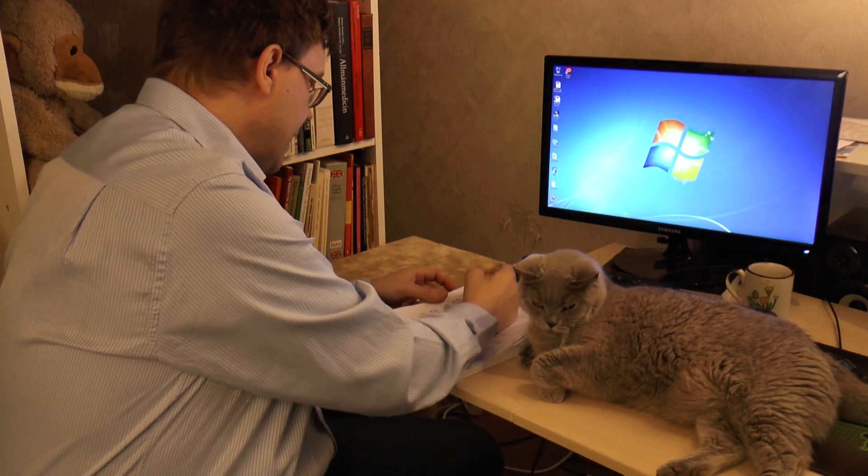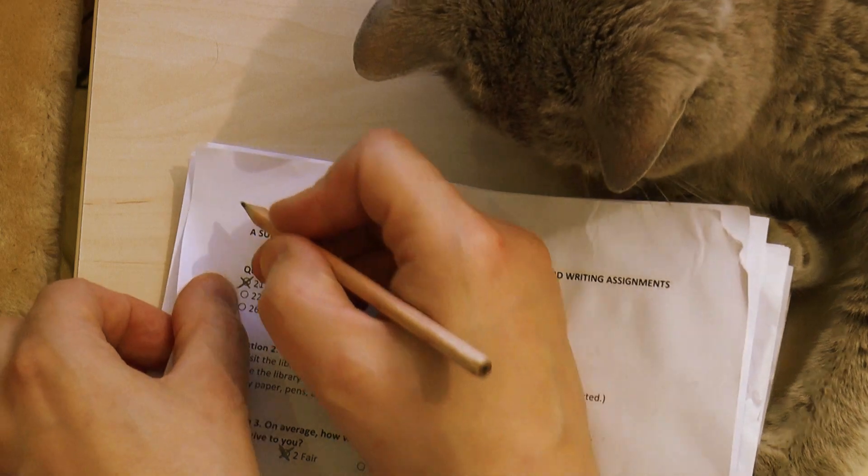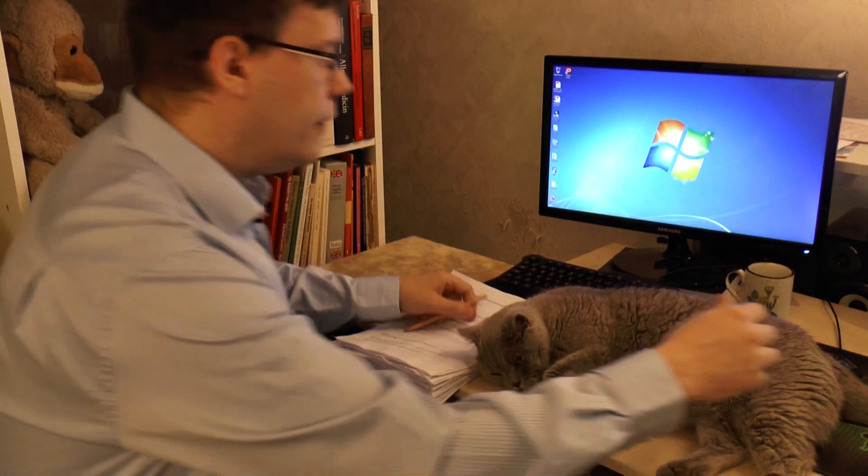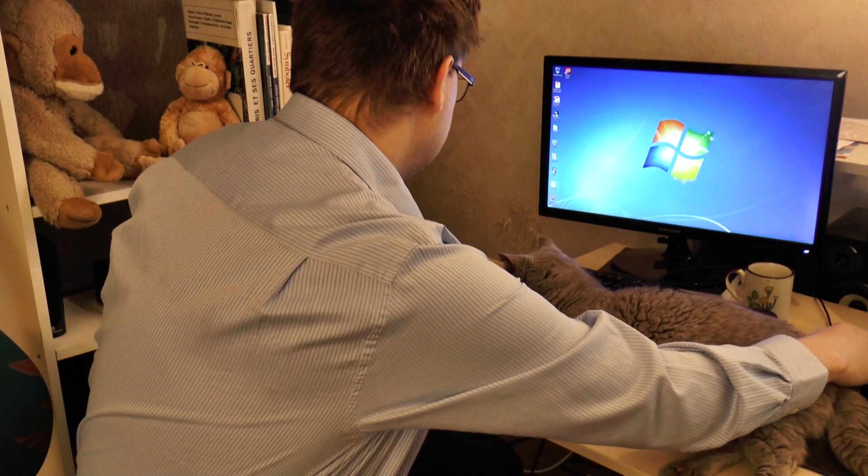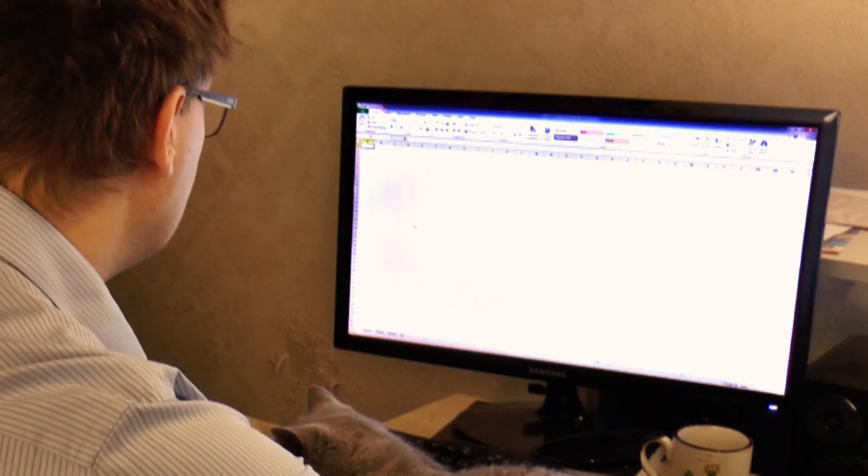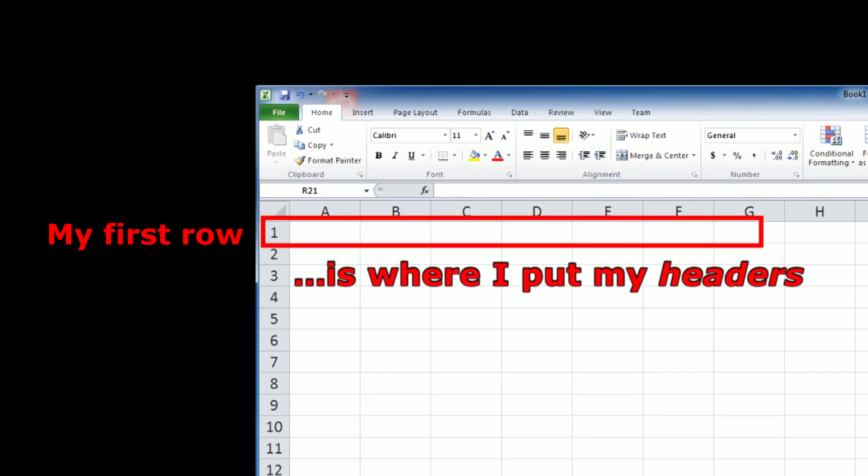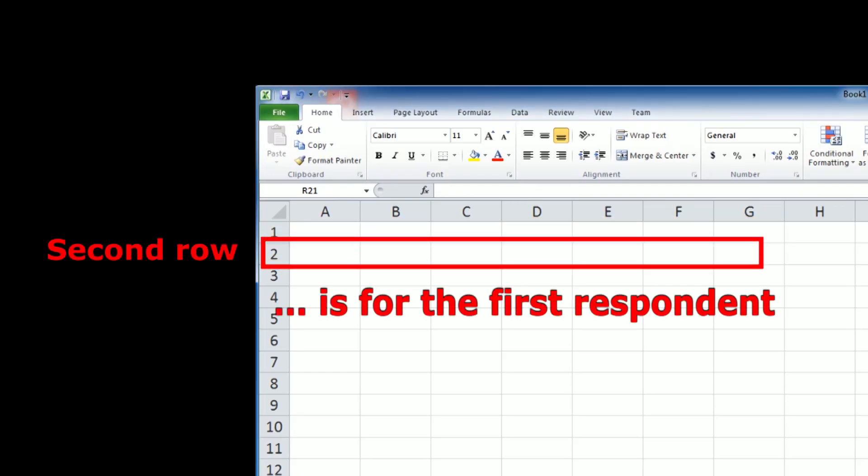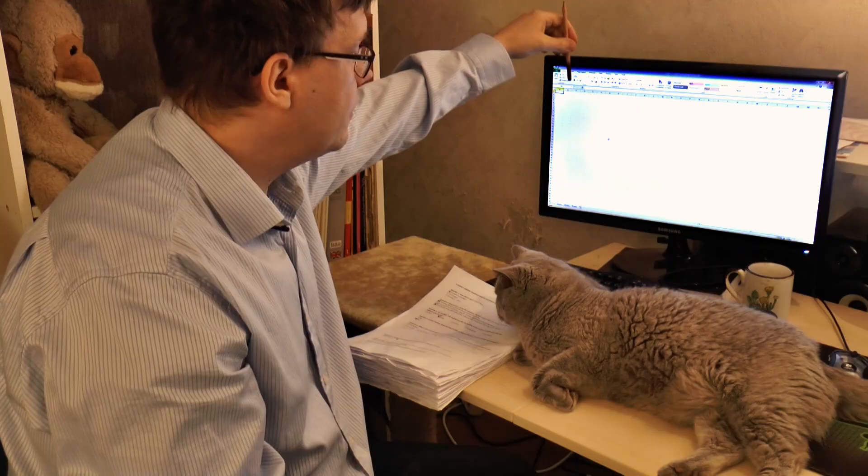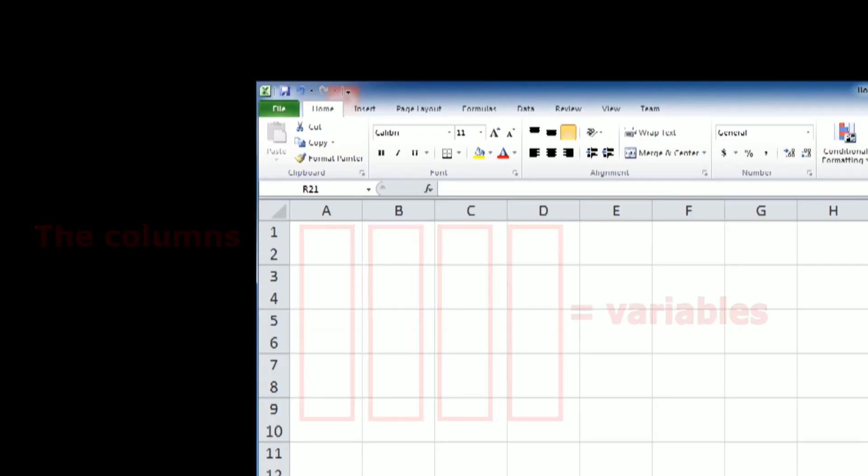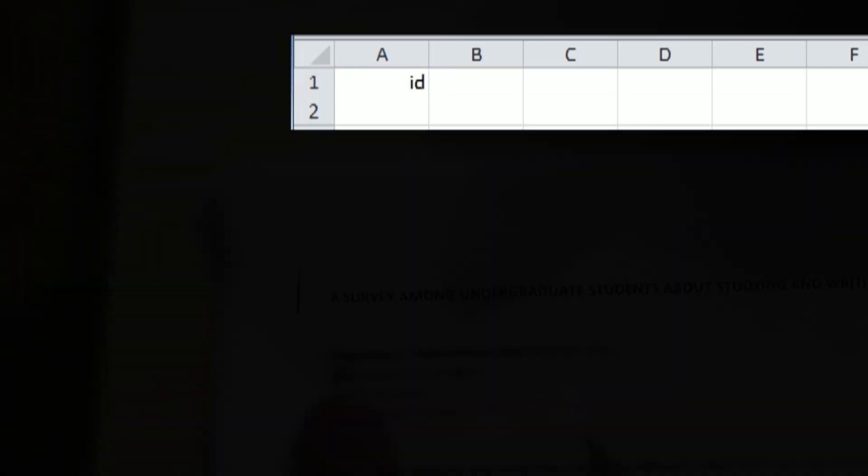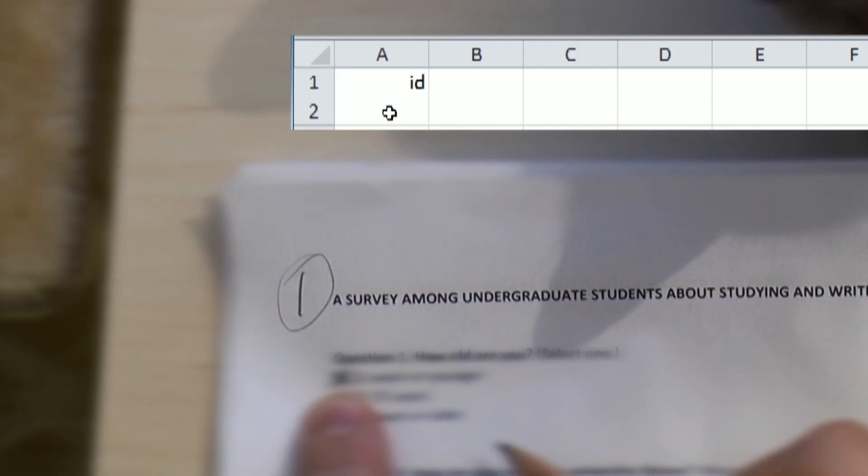The first thing I do is put a unique consecutive identification number on top of each questionnaire. The next step is to start Excel, and in Excel my first row will be where I put my headers and the second row is where I put the first respondent. The columns, that's going to be my variables. My first column header is ID and the first respondent has the identification number 1.